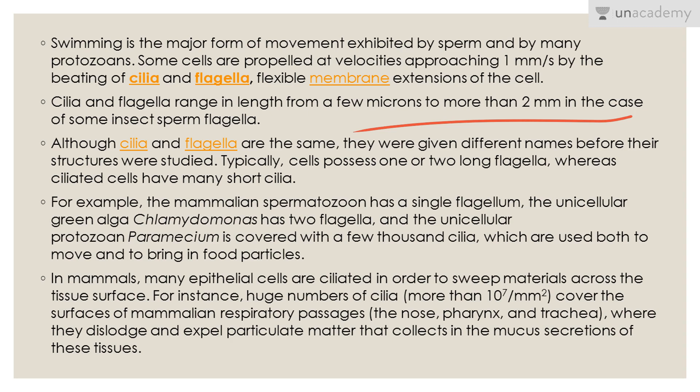Although cilia and flagella are the same, they were given different names because their structures were studied separately. A typical cell possesses one or two long flagella, whereas ciliated cells have many short cilia. For example, the mammalian spermatozoon has a single flagellum, the unicellular green alga Chlamydomonas has two flagella, and the unicellular protozoan Paramecium is covered with a few thousands of cilia, used both in movement and bringing in food particles.